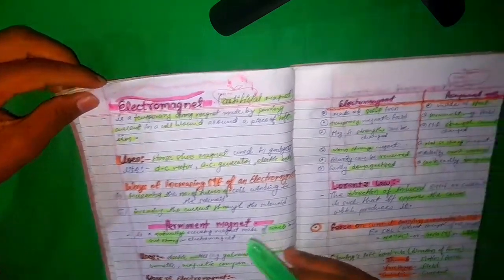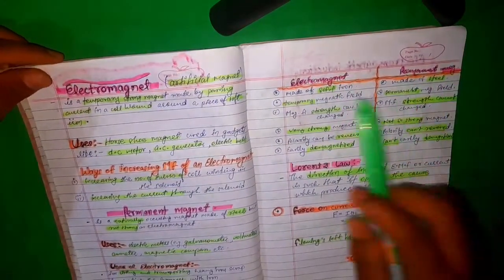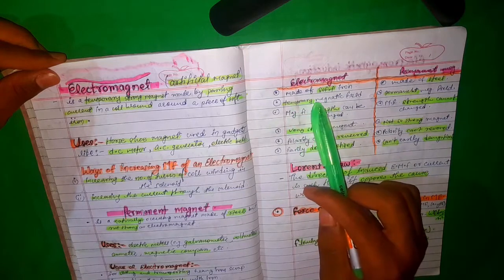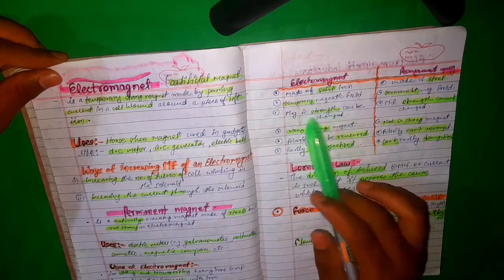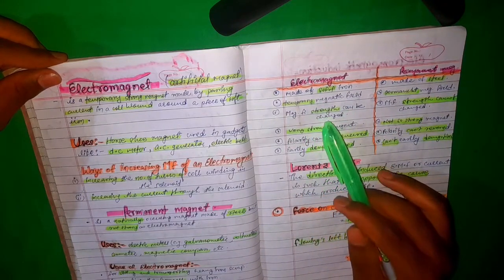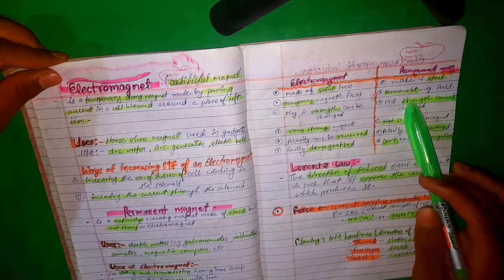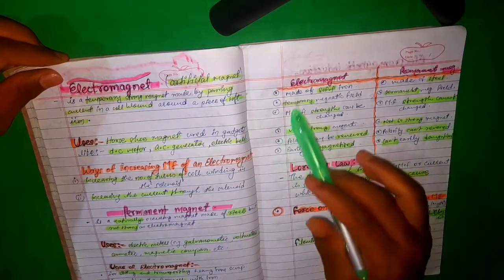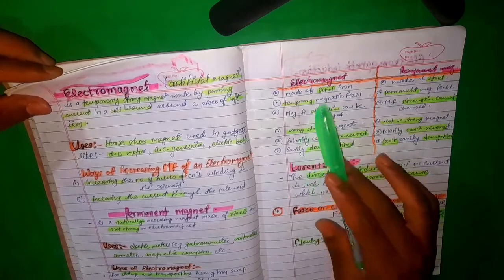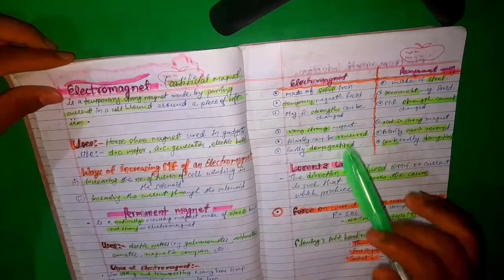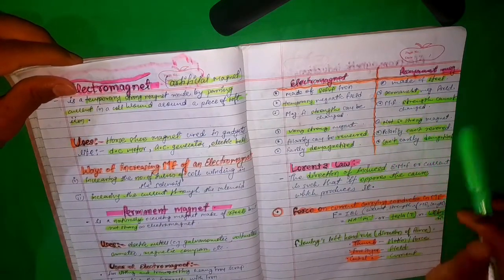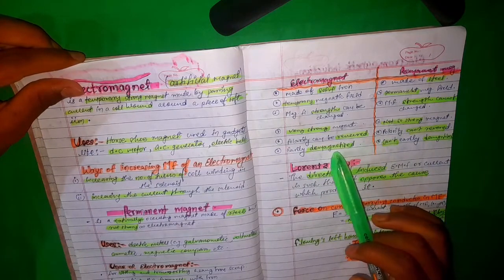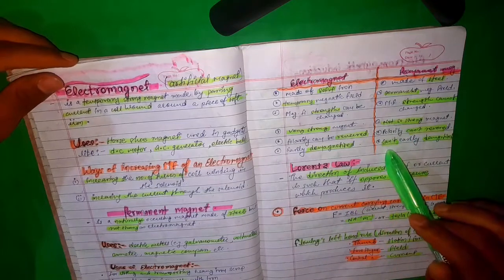Differences between electromagnet and permanent magnet: the electromagnet is made of soft iron and the permanent magnet is made of steel. The electromagnet produces a temporary magnetic field and the permanent magnet produces a permanent magnetic field. The magnetic field of the electromagnet can be strengthened and changed, but the magnetic field of the permanent magnet cannot be changed. The electromagnet is very strong and the permanent magnet is not as strong. The polarity of the electromagnet can be reversed by reversing the flow of current, but the polarity of a permanent magnet cannot be reversed. An electromagnet can be easily demagnetized by removing the current, but a permanent magnet cannot be easily demagnetized.